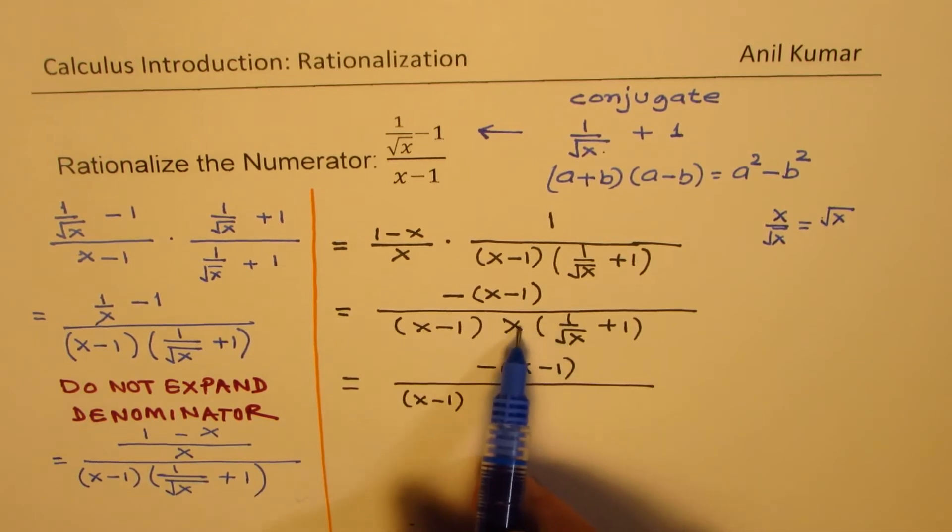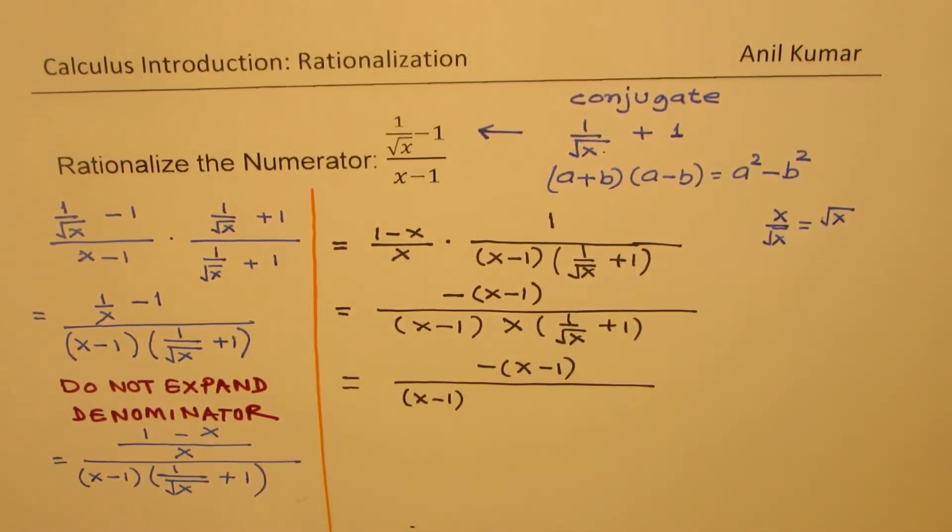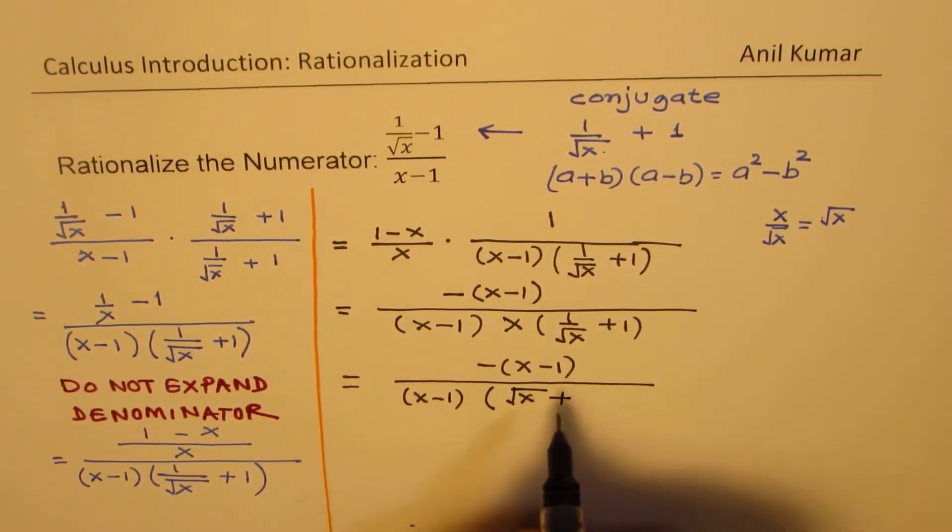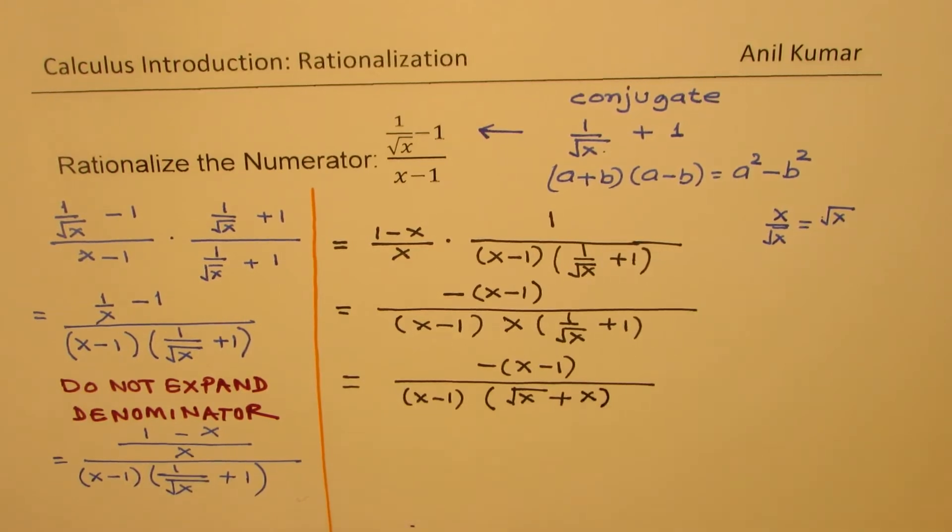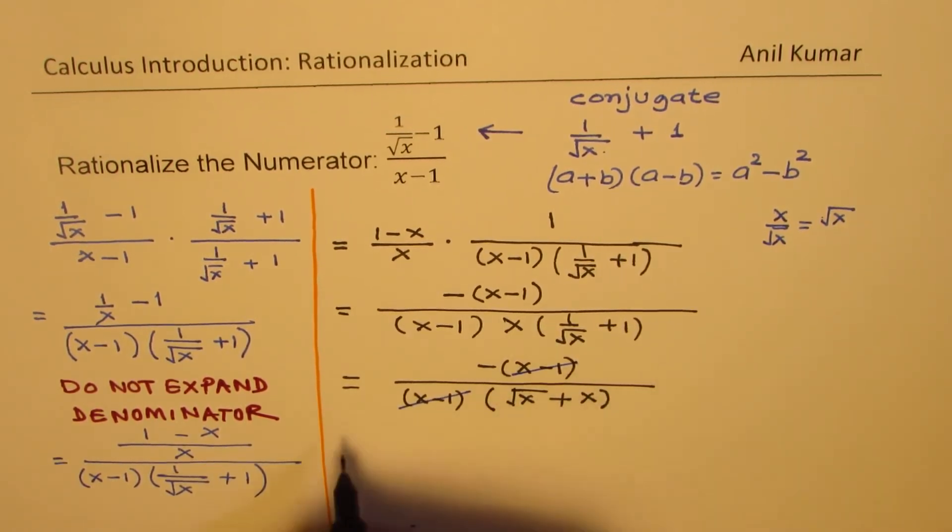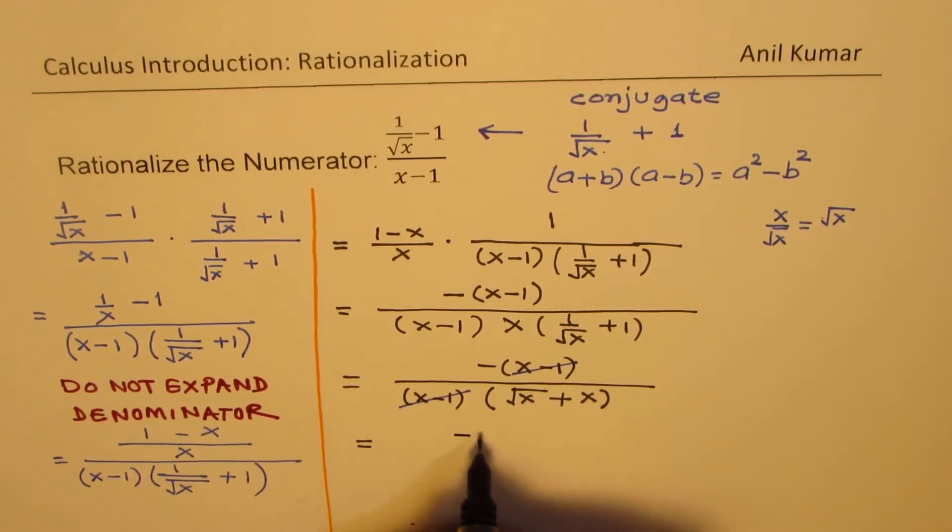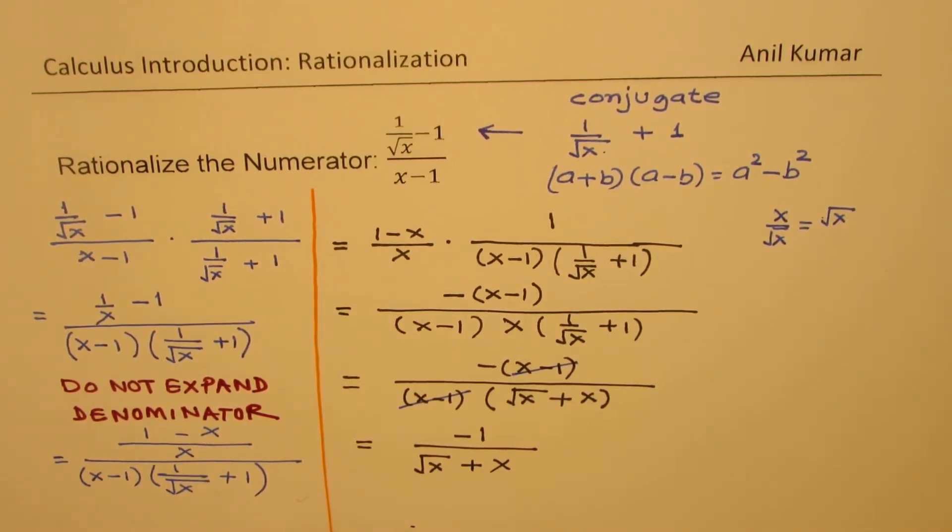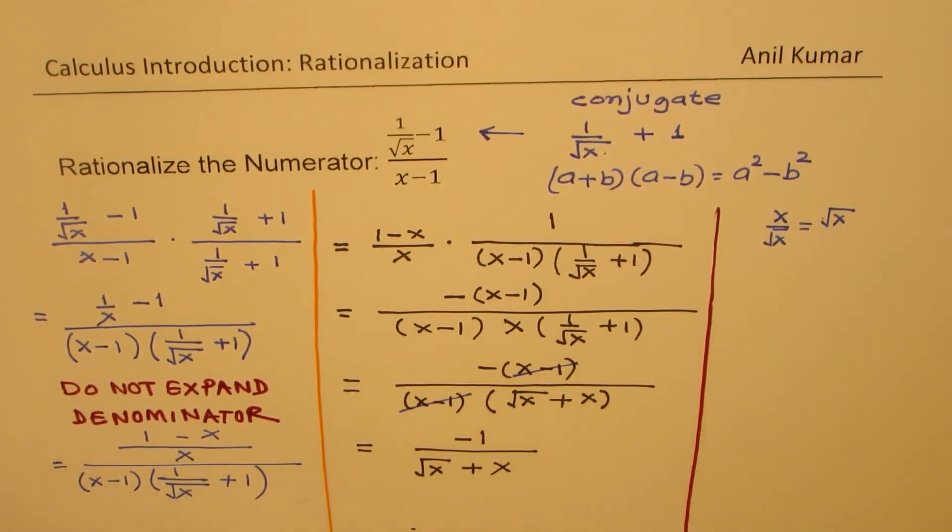When you multiply with the first term, what you get inside this bracket is square root of x plus x times 1, which is x. Is that clear to you? At this stage, you can now cross x minus 1, and then you get your result, which is minus 1 over square root of x plus x. I hope these steps are absolutely clear.